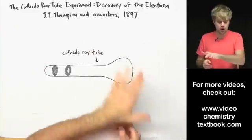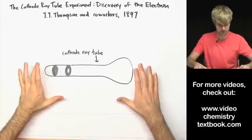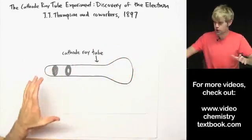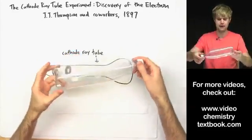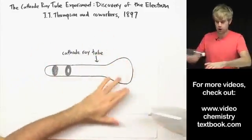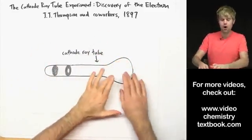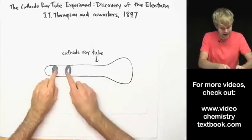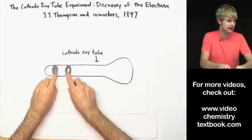Thompson used what's called a cathode ray tube. It's a big tube of glass that's kind of like a bottle. You can imagine it's sort of like this soda bottle. It's sealed all over and then you pump all the air out of it. And it has these two pieces of metal at this end.